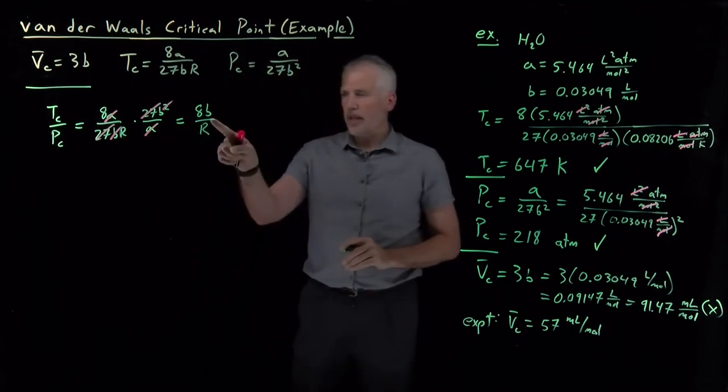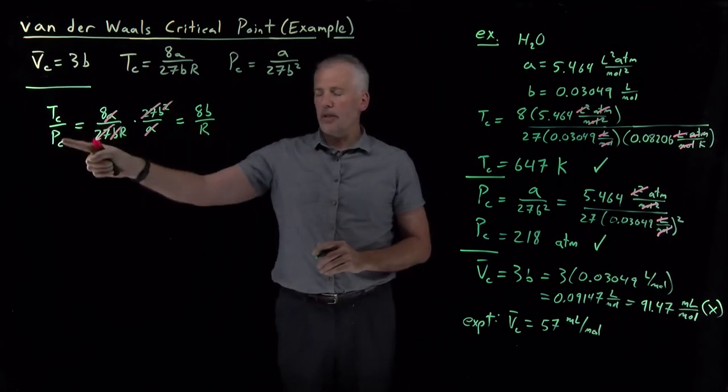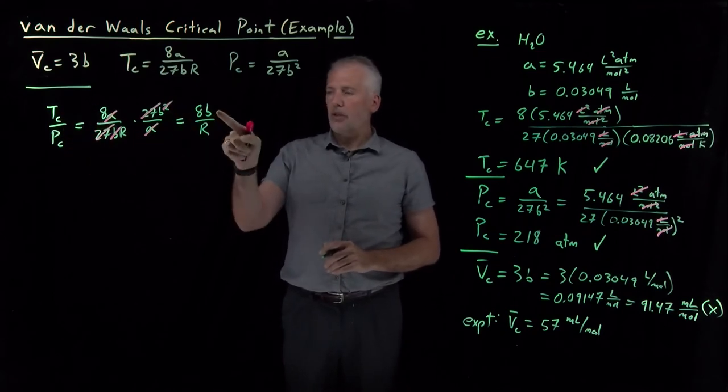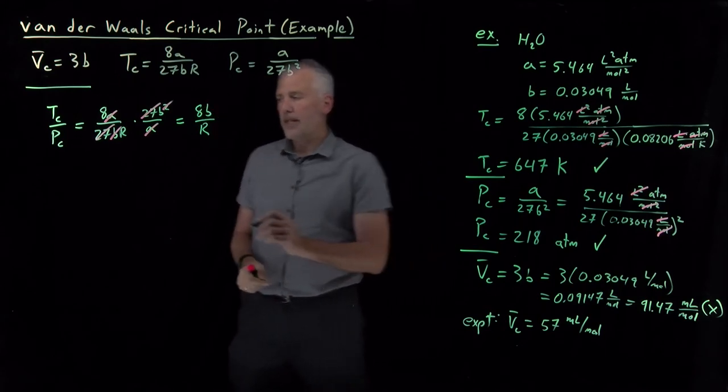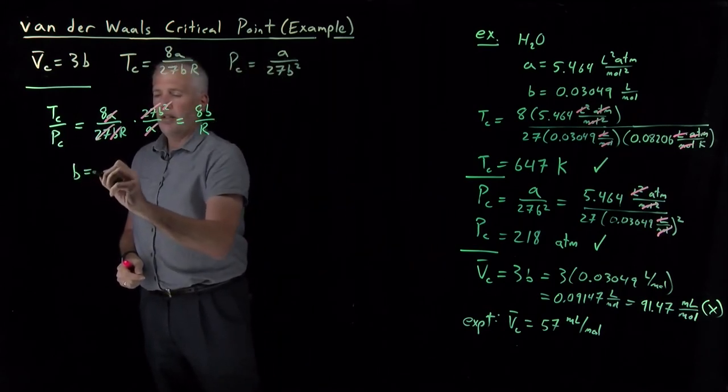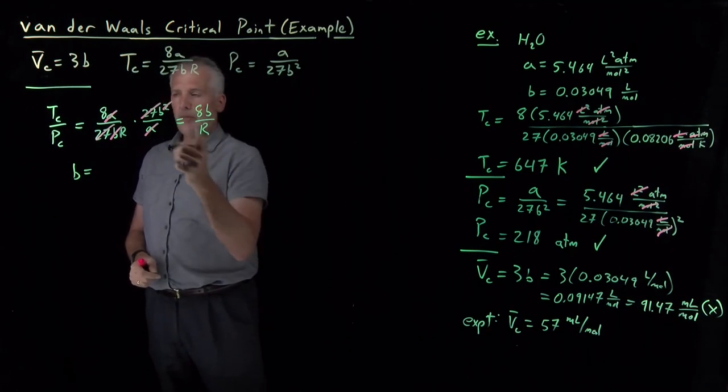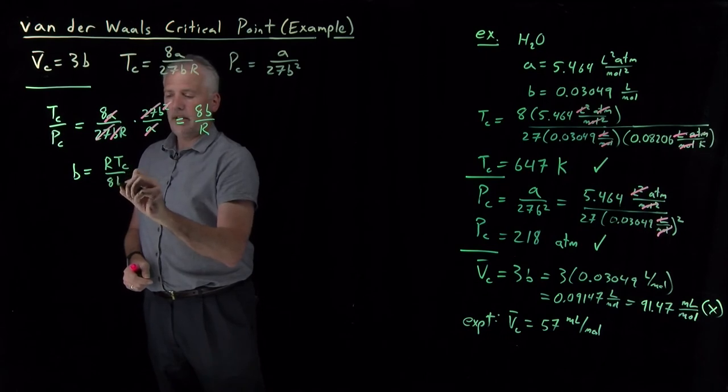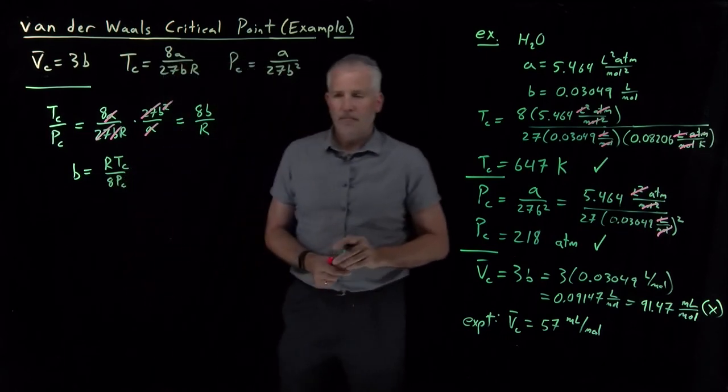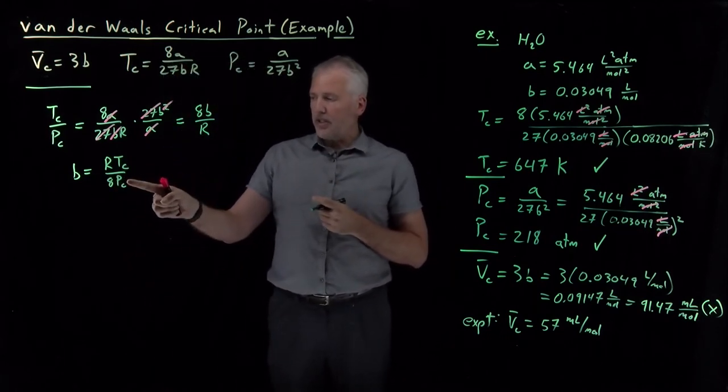Leaving me with 8B in the numerator, this B survives, and an R in the denominator. What I can do with that - remember what I'm trying to do is, given the critical temperature and pressure, solve for some Van der Waals coefficients. So if I rearrange this equation to solve for B, I'll find B is equal to - if I bring the R to the other side, it shows up on top, that 8 shows up in the denominator. So if I know the critical temperature and pressure, I can solve for B.